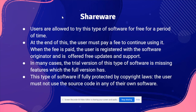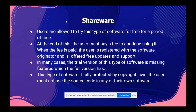In many cases, the trial version of shareware is missing features available in the full version, because the developers withhold some functionality to encourage you to buy it — it's essentially a promotion strategy. Shareware is protected by copyright laws, so you cannot use the source code in your own software or copy it. Even if you reference the original author, you still cannot use the code unless you have explicit permission from the copyright holder.